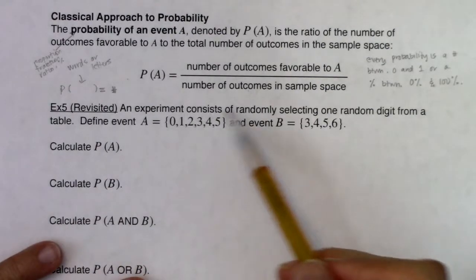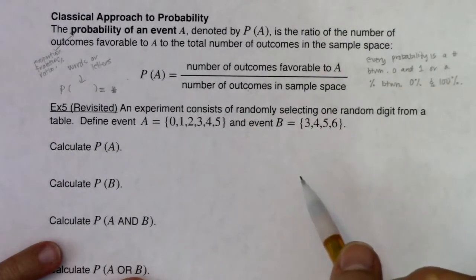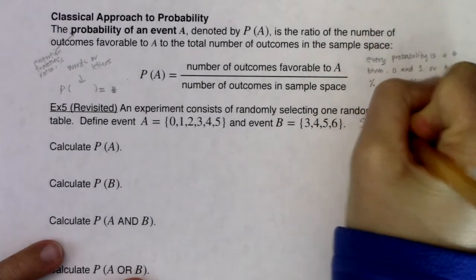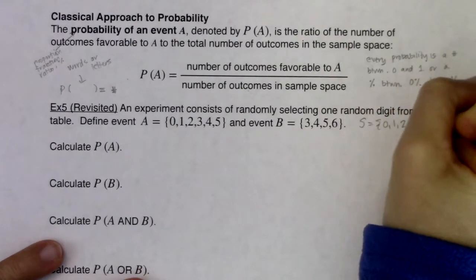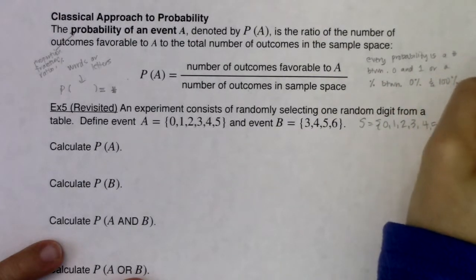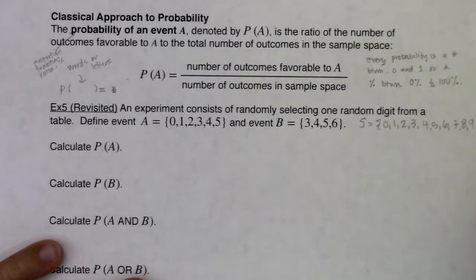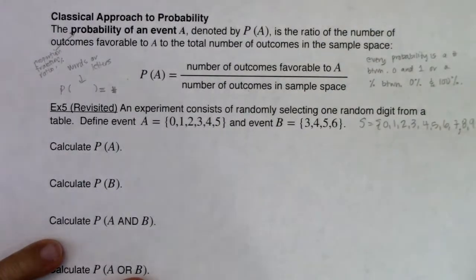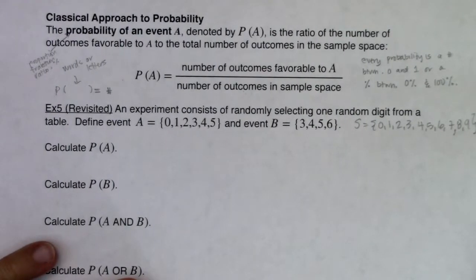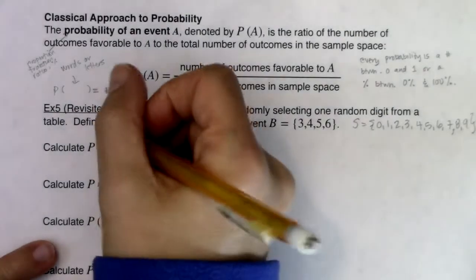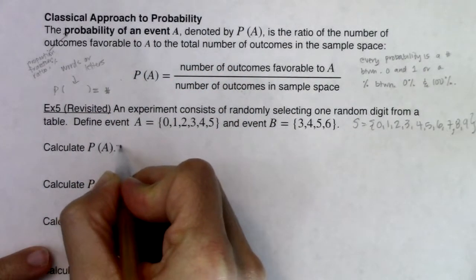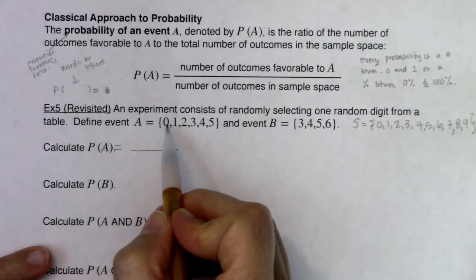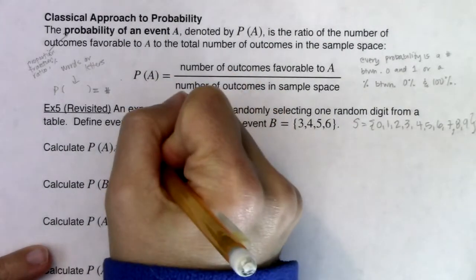Let's go back to our experiment of randomly selecting one digit from a digit table. We had event A and event B, and our sample space was zero through nine. To calculate the probability of event A, I see capital P, parentheses, a letter — so I put the equal sign. The number of outcomes favorable to A: there were six outcomes favorable to A.